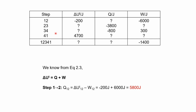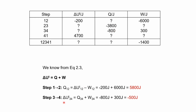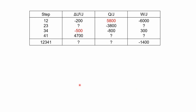Now let's look at step 2 to 3. For step 2 to 3, we only have Q — we don't know ΔU or W. That means we have two unknown variables but only one equation, so we won't be able to solve it for now. Moving on to step 3 to 4: we have Q and W, and we need to find ΔU. With one unknown and one equation, it's straightforward — just plug in the numbers from the table to find ΔU for step 3 to 4.